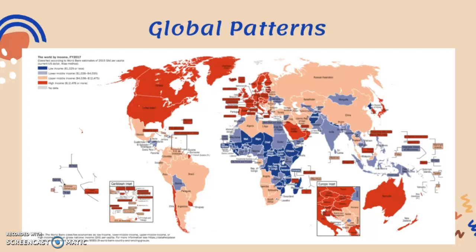Lower-middle income countries are shown in a lighter shade of blue and include India, Myanmar, Indonesia, Sudan, and Bolivia. Finally, the low-income countries are largely centralized around Africa, with a few exceptions such as Afghanistan and North Korea.